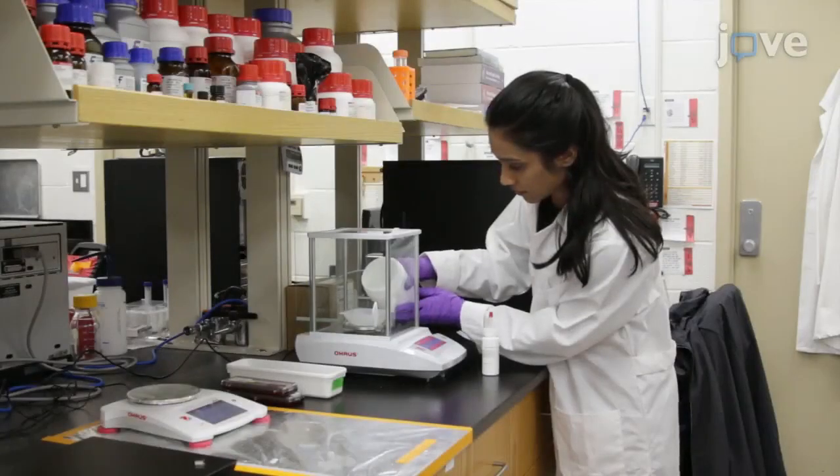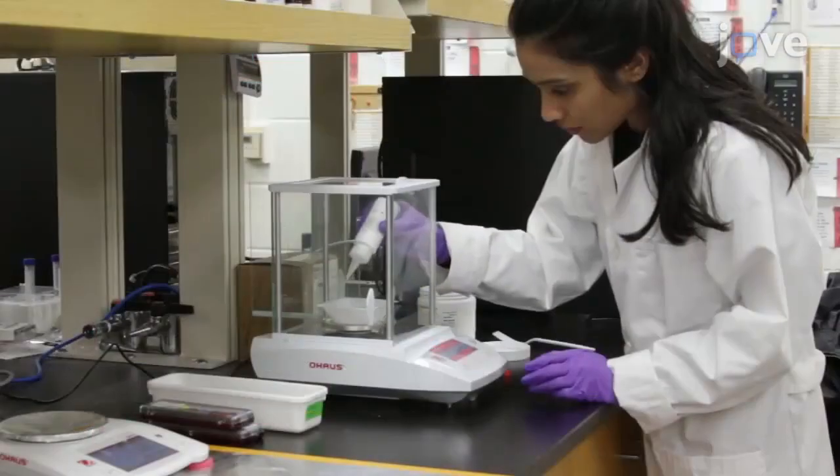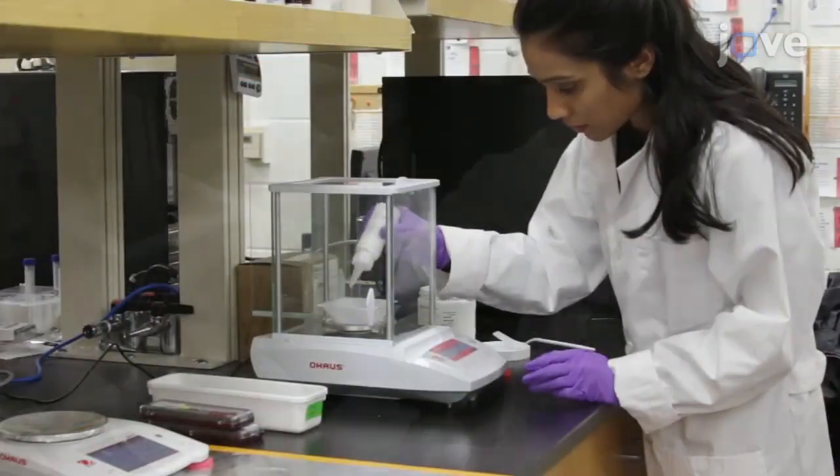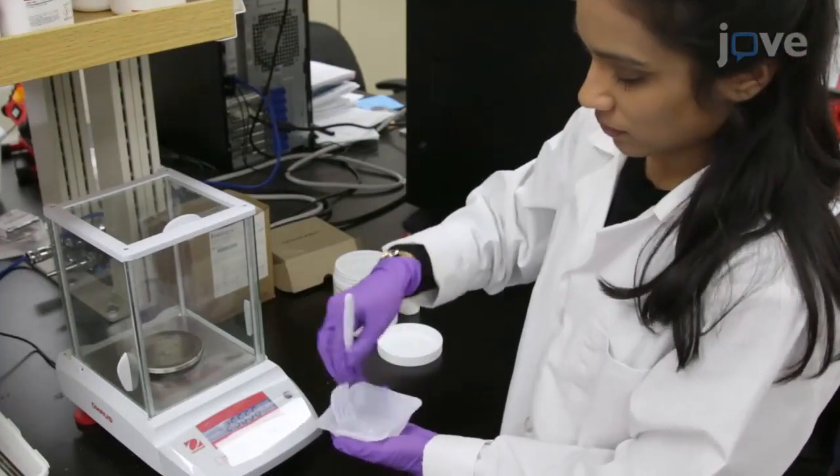To prepare the microfluidic device, add five parts of silicone elastomer base to one part curing agent in a weighboat and stir the contents thoroughly for one minute to create a pre-cured PDMS solution.